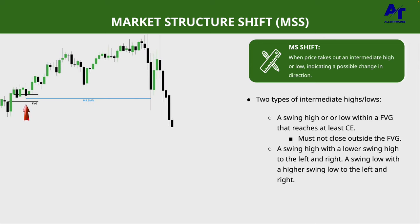Here is an example of the first type. Looking to the left, we have a swing low that is within a fair value gap and it comes to at least halfway — also known as consequent encroachment — of that fair value gap. So that low is an intermediate swing low. Later on in price action, price goes below it. For a market structure shift, the bodies don't have to go below it — it's a bonus if they do — but only the wick needs to take out that low.